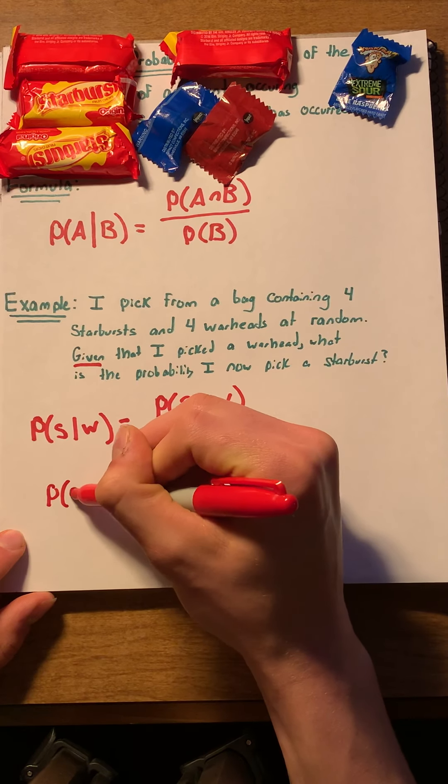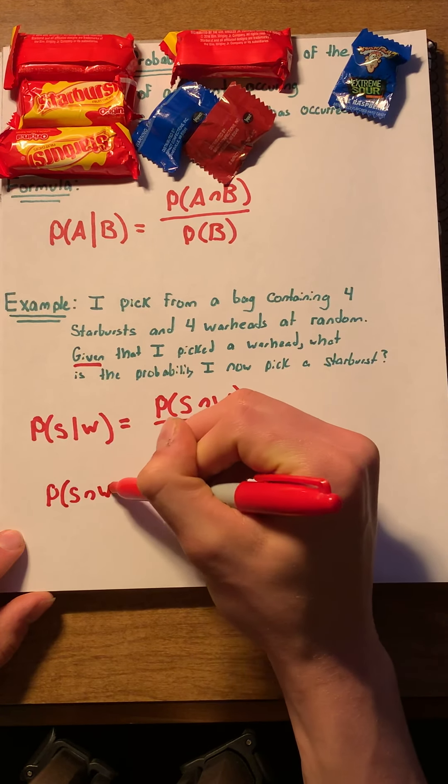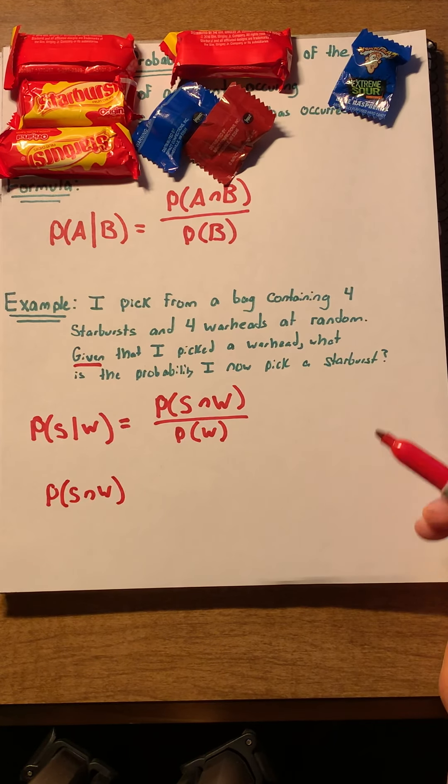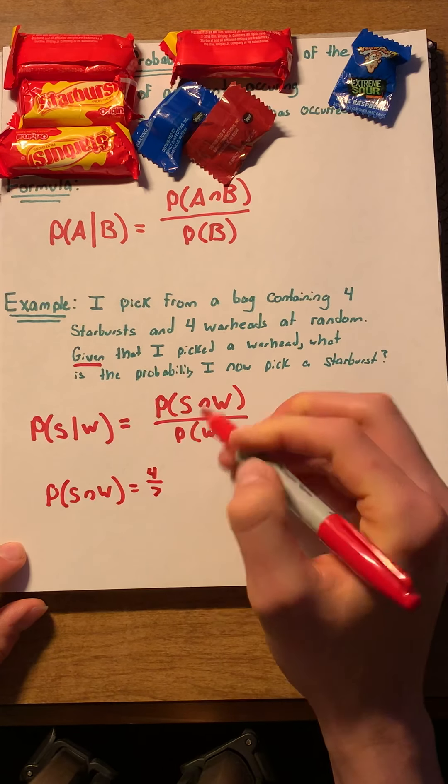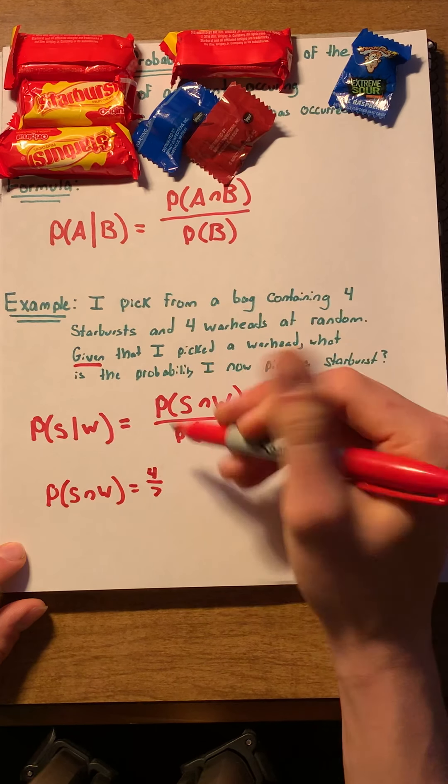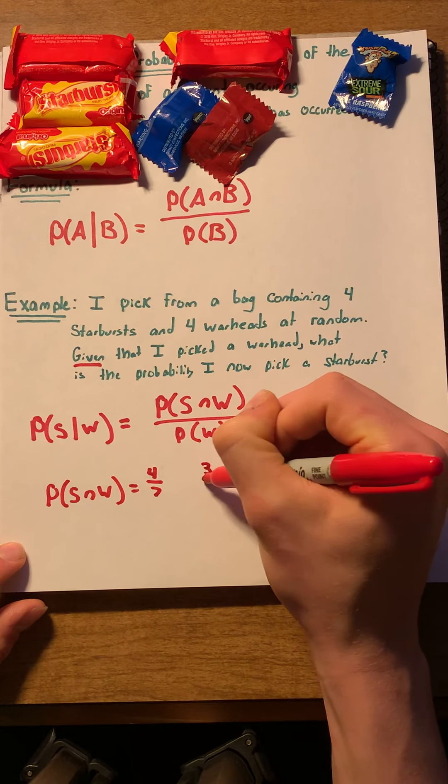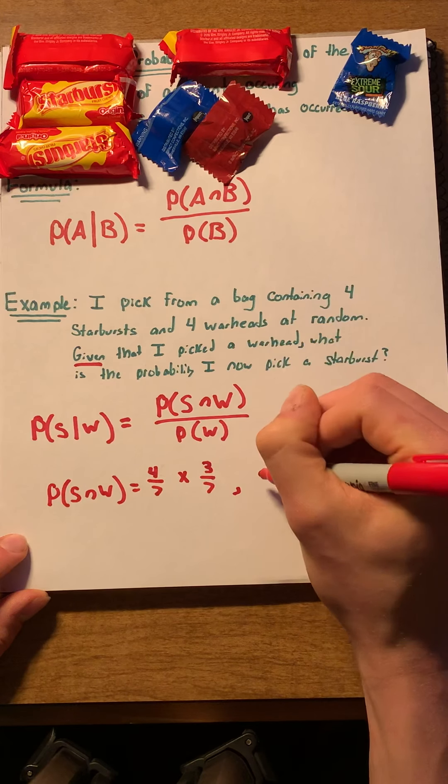The probability of starburst and warhead is pretty easy. We see that the probability of picking a starburst is four-sevenths, and the probability of picking a warhead is three-sevenths. Now, when we see the word AND, we remember that that reminds us of the product rule. And so, we multiply those together.